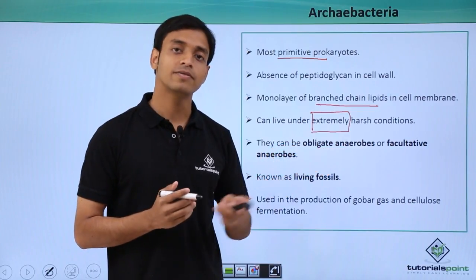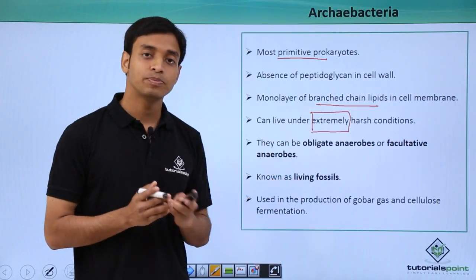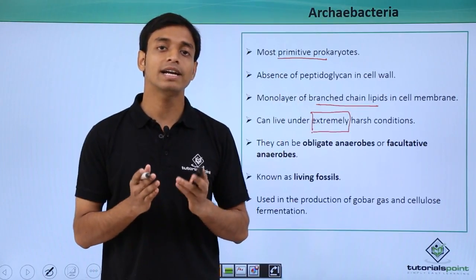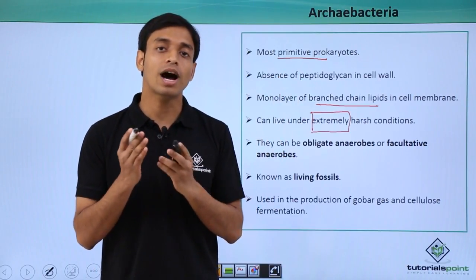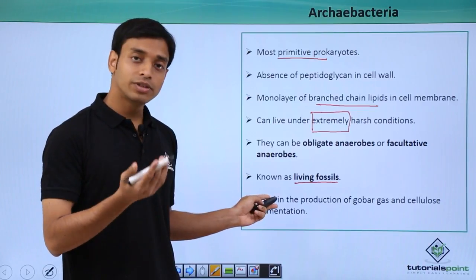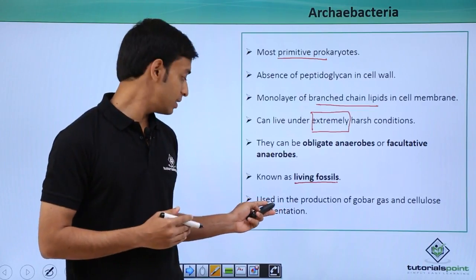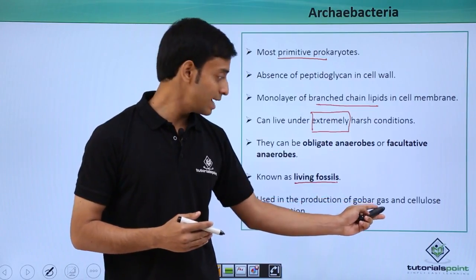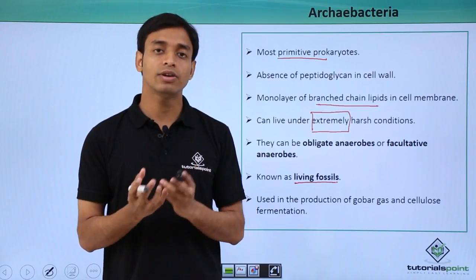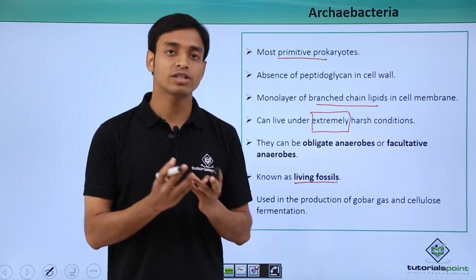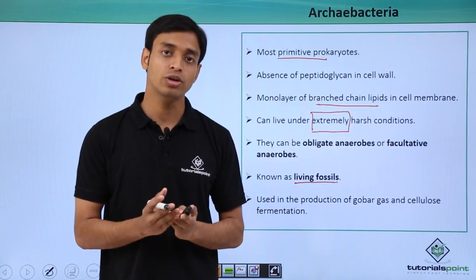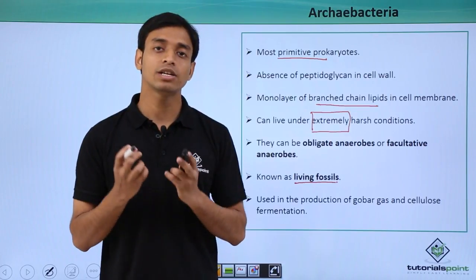Archaebacteria are known as living fossils because they are considered one of the most primitive or earliest forms of prokaryotes. One important use of Archaebacteria is in the production of gobar gas and cellulose fermentation. In gobar gas plants, dead organic matter and waste materials are fermented by these bacteria, resulting in the formation of manure and gases used as fuel.